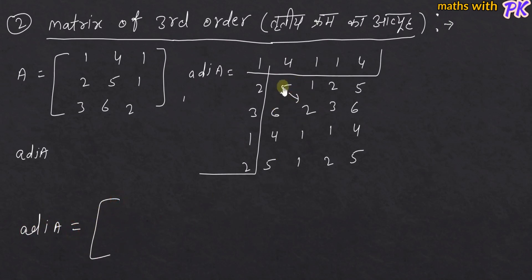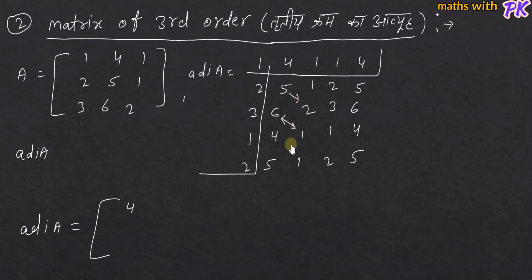For element (1,1), minor: 5×2 minus 6×1 = 10 minus 6 = 4. For element (1,2): 6×1 minus 4×2 = 6 minus 8 = -2. For element (1,3): 4×1 minus 5×1 = 4 minus 5 = -1. So the first row of the cofactor matrix is 4, -2, -1.